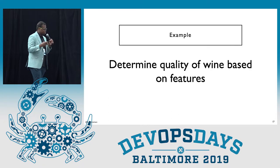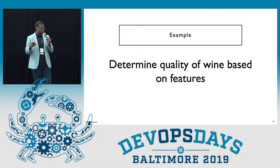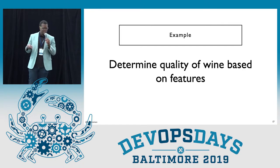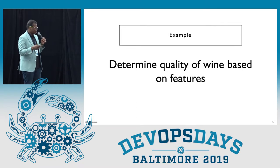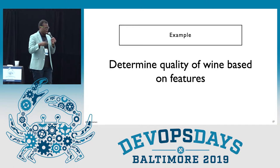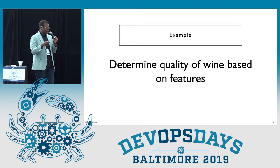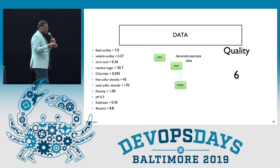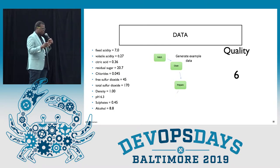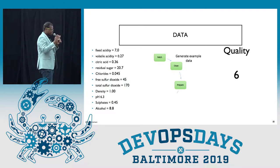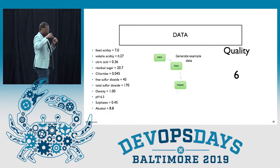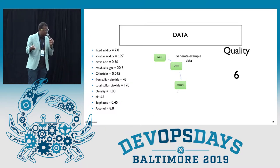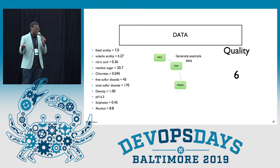To show how these tools work in practice, I'm going to run through an example predicting the quality of wine based on a set of features. Each of these tools have different strengths and weaknesses, so I'll highlight some as I go through how a machine learning engineer would write a pipeline. In this example, there are 12 different features, and each of those allows you to determine a quality — features like pH, acidity, alcohol content, and based on that, a quality is derived.